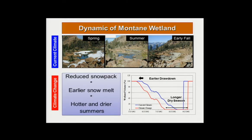For climate change, we know that there will be reduced snowpack, earlier snowmelt, and hotter and drier summers. These kinds of changes in hydrology will also affect wetland hydrology, so we may expect some ponds to experience earlier drawdown and longer dry seasons. Without a model, we can conceptually expect these kinds of things. But do we really know how these ponds respond to climate change? Do they respond equally? If not, how do they respond differently temporally and spatially?